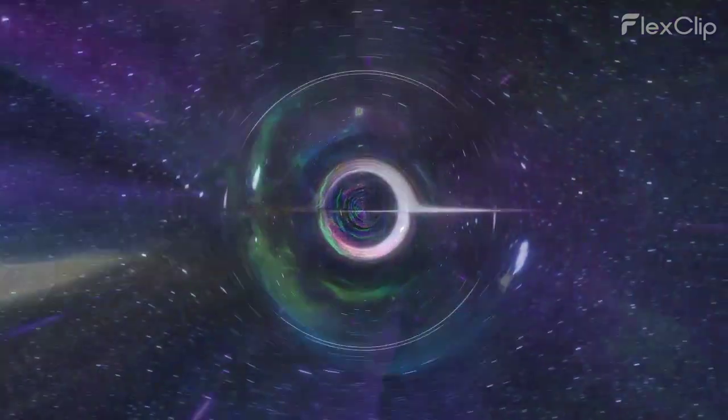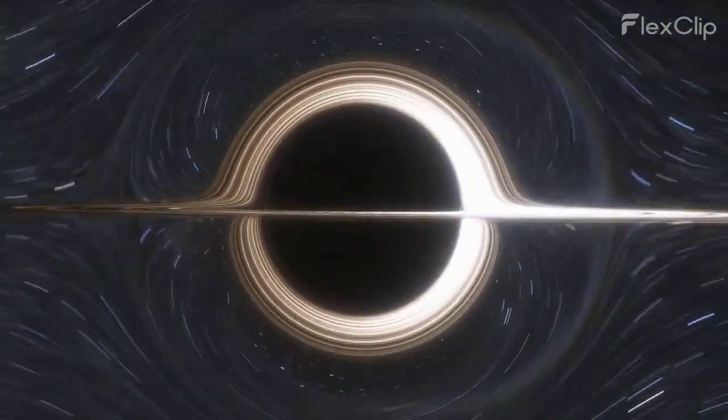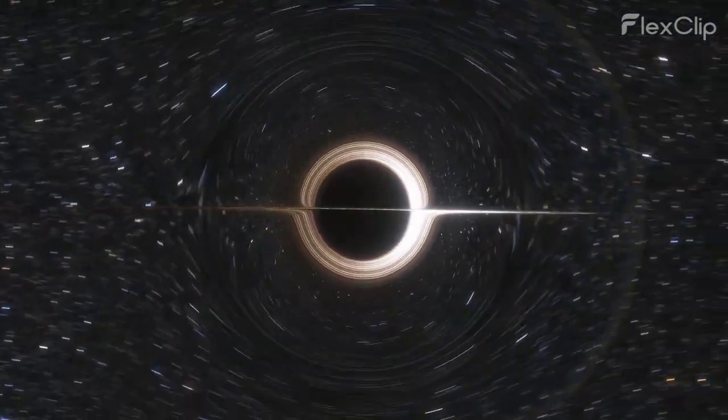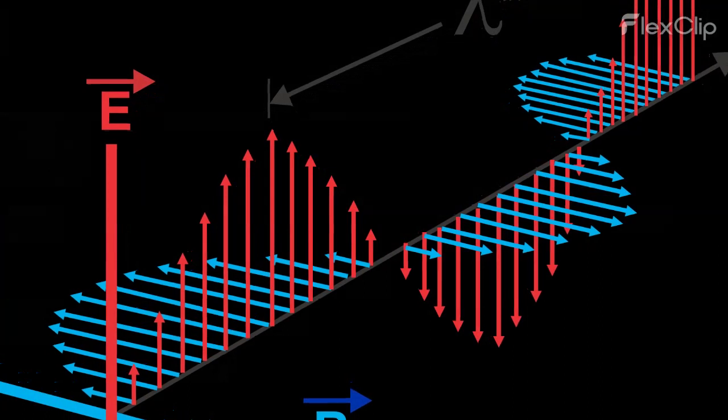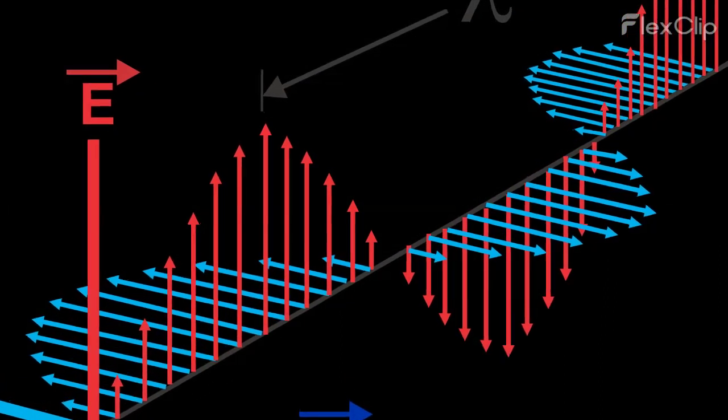In this framework, events are described by their coordinates in space-time, which include three spatial coordinates—length, width, and height—and one temporal coordinate: time.